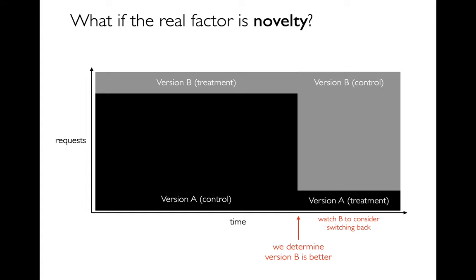Another real concern is that humans like novelty. Maybe I try version B and it's actually worse, but people like it better anyway just because it's something new. A good strategy here is that when you first do the experiment, have most traffic on the original version A and give a few users version B. If version B ends up being better, then mostly switch to version B but not completely — keep showing some percentage of people version A to see if it was just novelty, and eventually you might want to switch back. Don't make changes based on novelty thinking it's for the long term.